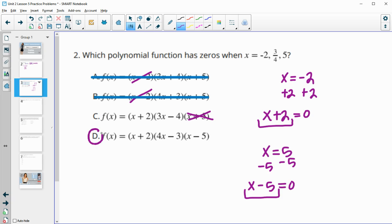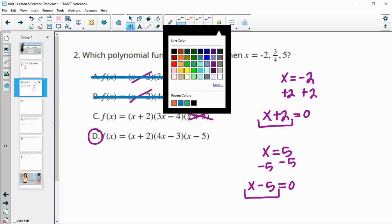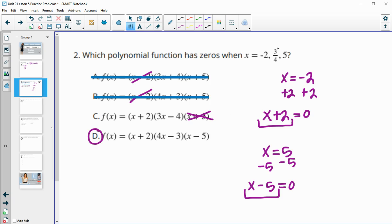So that means that it would be D. And you can check to make sure that 3 fourths is correct by looking at this and just solving it. So 4x minus 3 equals 0. We would add 3 to both sides. So then you get 4x equals 3, and then you're going to divide by 4. So you would get x equals 3 fourths. So that's good. So zero of negative 2, positive 3 fourths, and positive 5.